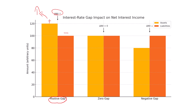If over that same time period we have no gap or a zero gap, the change in our net interest income would be zero. However, if we look at our negative gap — meaning more liabilities are going to reprice over this time horizon than assets — and if interest rates rise, what this means is we're going to be paying our depositors more money to keep their assets at our bank, and thus this is going to hurt our net interest income.